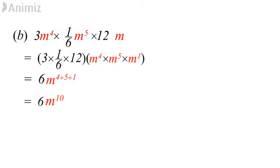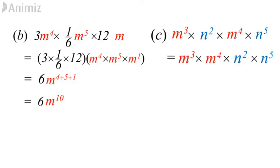Example C: group the terms with the same base, then do the addition operation of the indices for terms with the same base. At last we end up with m^7 and n^7.